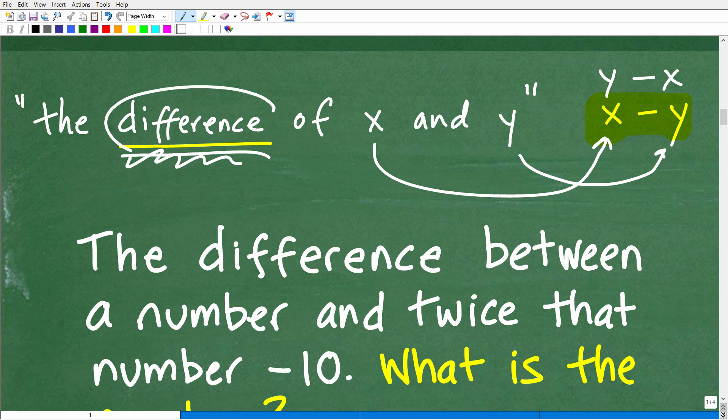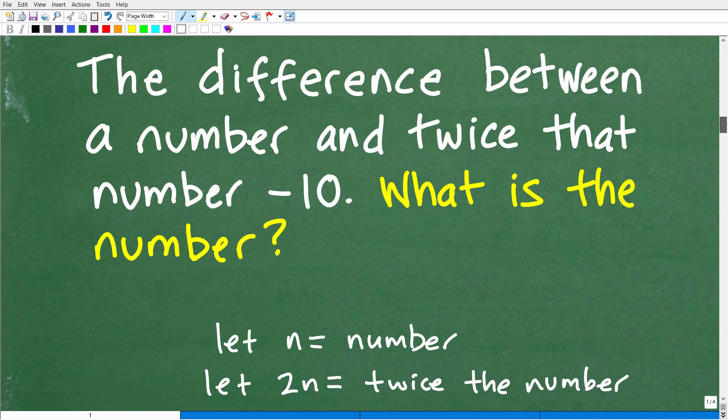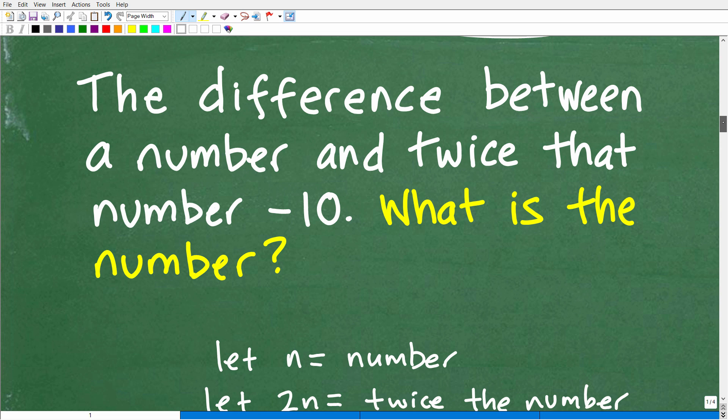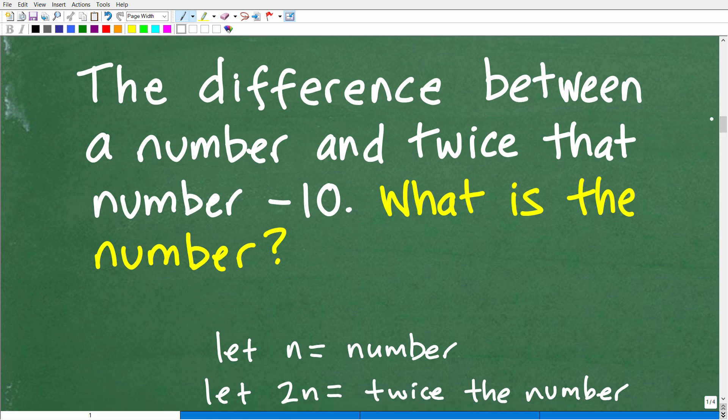So if you understand the difference, then we should be able to do this prompt with a little bit of algebra involved, but not that, it's gonna, you know, hopefully not gonna be that difficult of a prompt to do. So the difference between a number and twice that number is, let's go ahead and put that word is, negative 10. What is the number? Well, we need to kind of establish some variables here, right? We're dealing with a word prompt and we're dealing with a number, right?